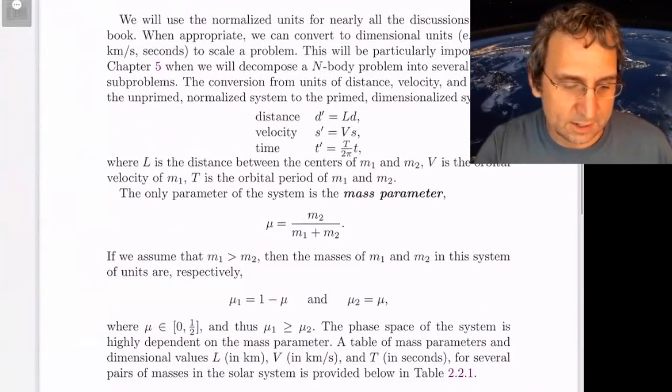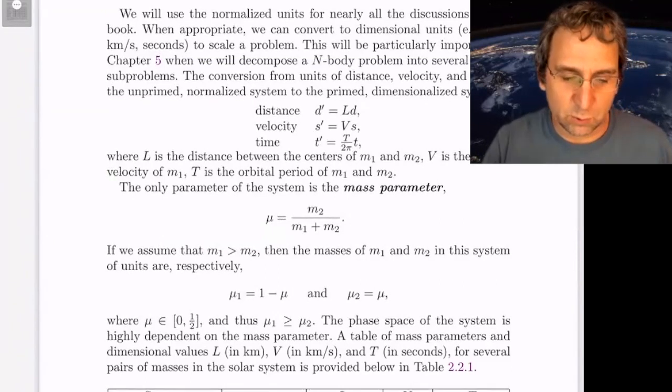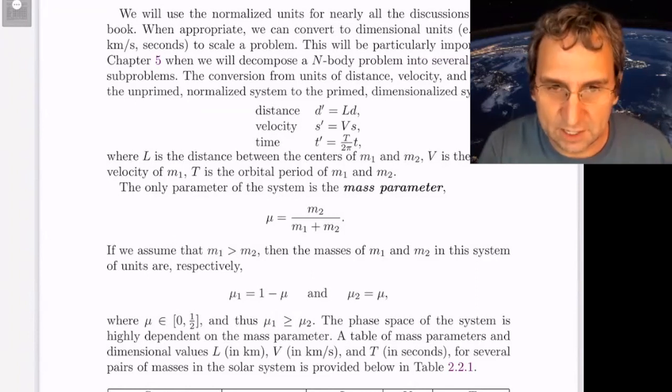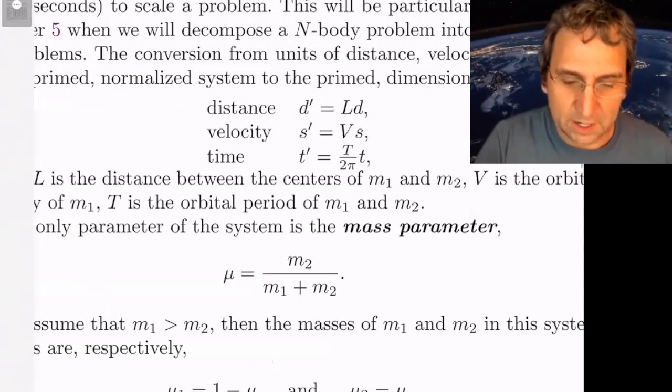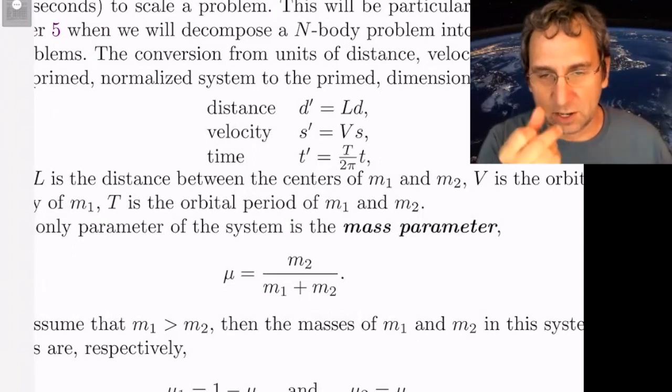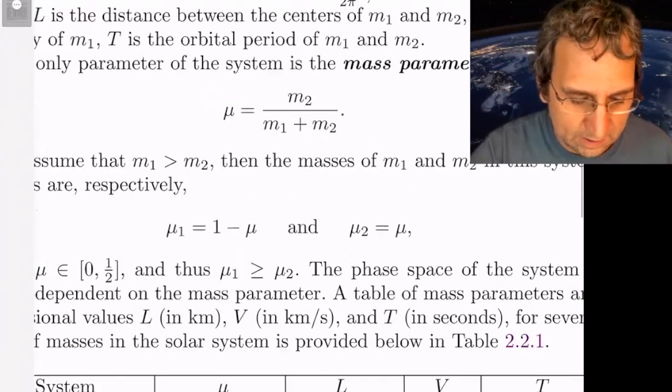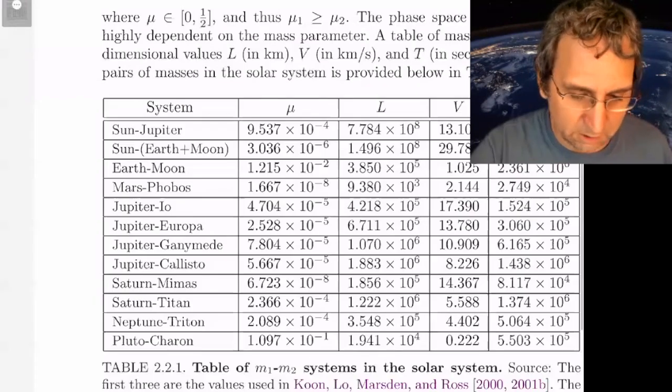And we actually put that in our book for a few examples. So this is saying that the conversion from the primed dimensionalized system, if you want the dimensionalized, that's the left-hand side of this equation up here. The non-dimensional is the unprimed. So if you have a length scale L, and then a time scale T, capital T over two pi, and then the velocity you can just get from those two.